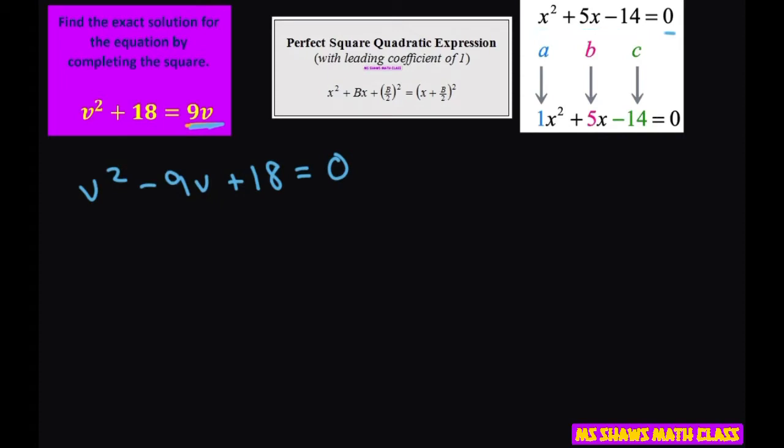So, and that's what we're going to use to complete the square, this b part. And I'm going to rewrite this again and write this as v squared minus 9v plus, and what we're going to do is be putting this b divided by 2 squared here. And then I'm going to subtract the 18 from both sides and also write the b divided by 2 squared there.